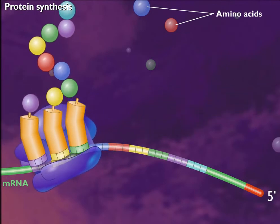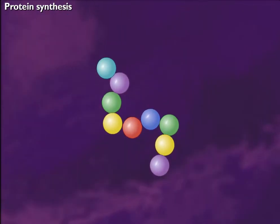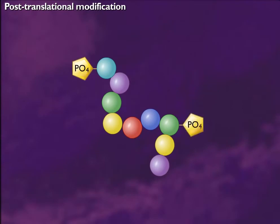Phosphorylation or other chemical modifications can alter the activity of a protein after it is produced. This is referred to as post-translational modification.